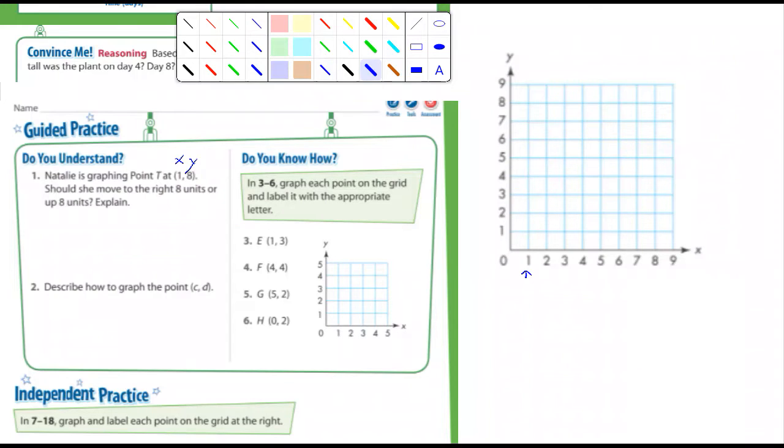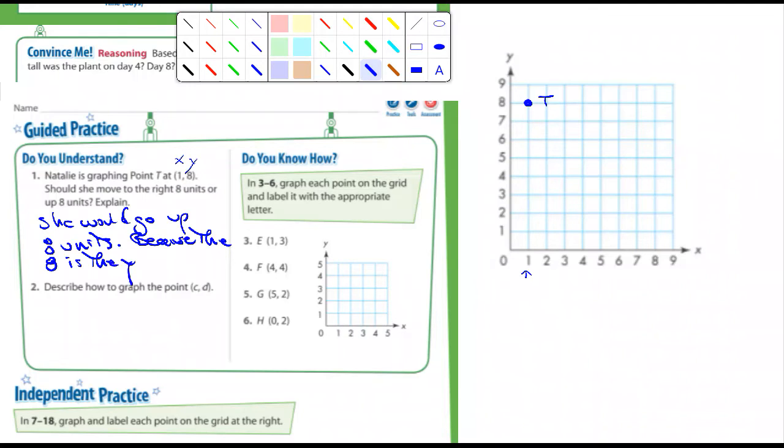Okay. So we'll go over 1 to right here. And then we're going to go up 8. And so here's the point. I'm even going to label it, call it point T. And so the question is, should she move to the right eight units or up eight units? And she would go up eight units because the eight is the Y value or the Y axis, either way.